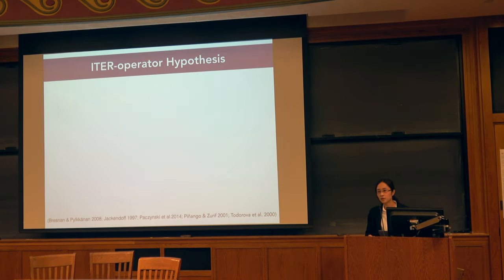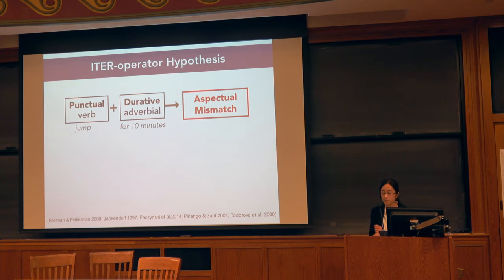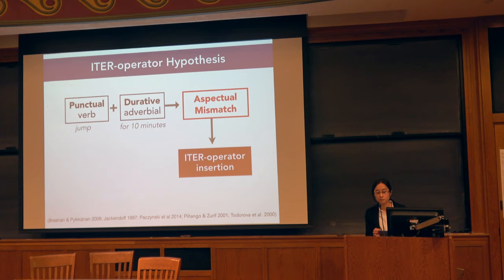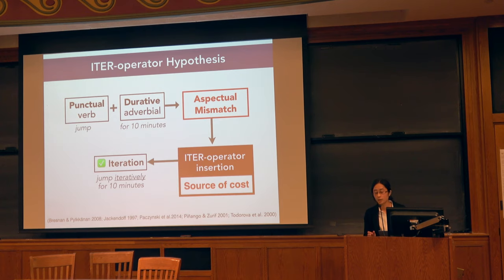Conventionally, this phenomenon is captured by the iter-operator hypothesis. Assuming that a durative 'for' adverbial selects for a durative verb, when you combine it with a punctual verb, you get a semantic mismatch. The mismatch calls for an iter-operator to be inserted in the semantic representation, shifting the punctual verb into an iterative meaning — giving you multiple jumping events. On this hypothesis, the processing costs observed in previous literature come from this insertion of the iter-operator in real-time.